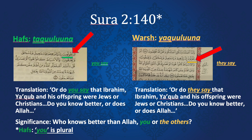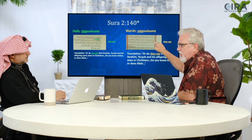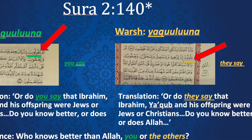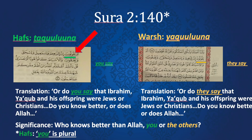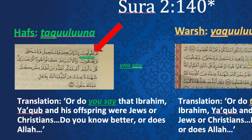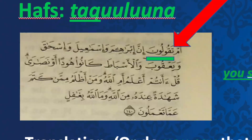Three dots above, two dots below. Warsh, however, in Egypt looked at the same smiley face shape and decided to put the two dots below, which makes it a Y. So there is the Y in Warsh's version, and the T in Hafs's version. Does that change the Arabic?